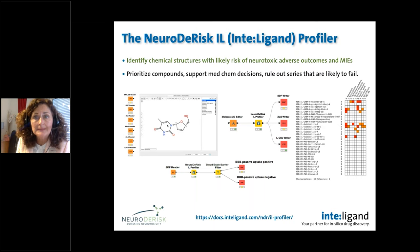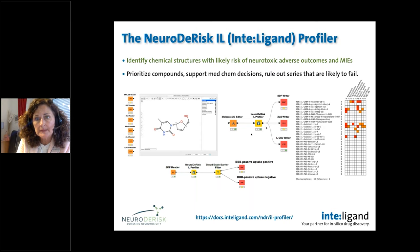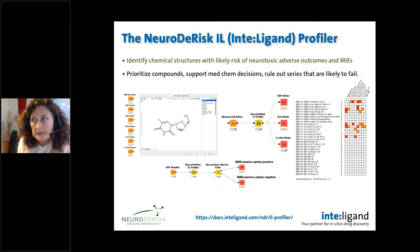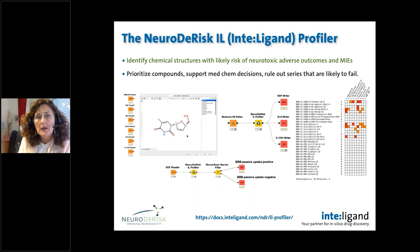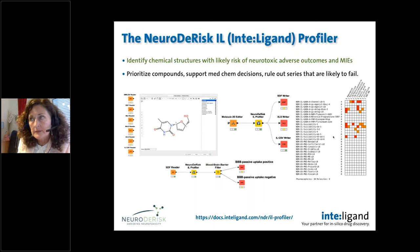The NeuroDeRisk interligan profiler is a tool you can use to identify chemical structures with likely risk of neurotoxic adverse outcomes and molecular initiating events. The idea is to use it to support med-chem decisions related to neurotoxicity — prioritizing compounds or chemical scaffolds, and most importantly, ruling out those scaffolds or compounds likely to fail as early as possible in the process. The input from the user is the chemical structure, and you get a profile rather than a simple yes or no answer about whether a molecule may have risk for a specific outcome.